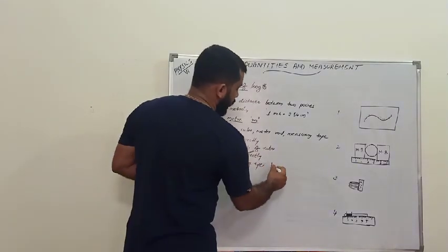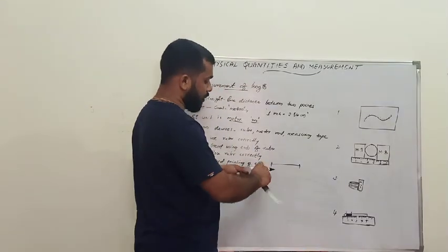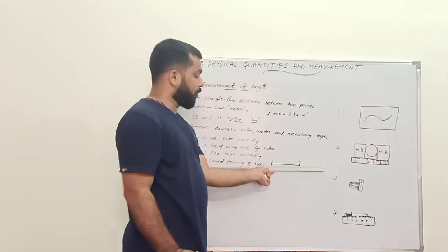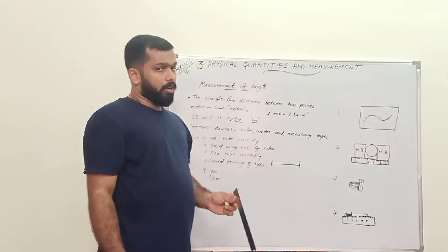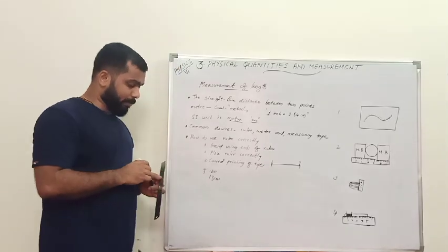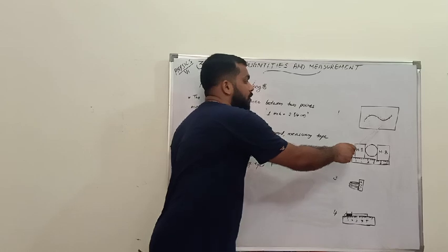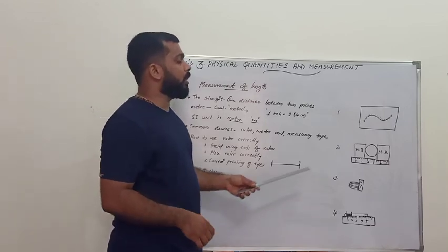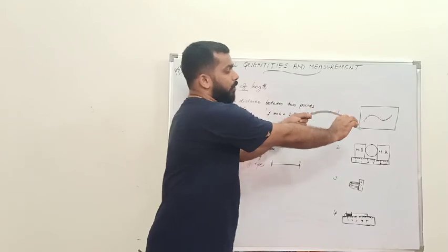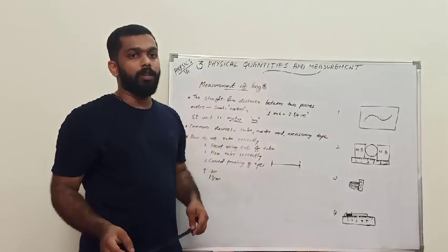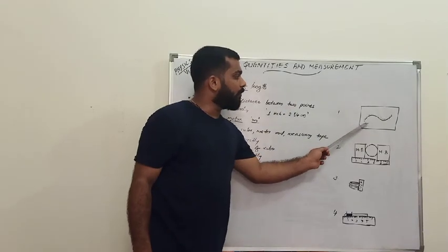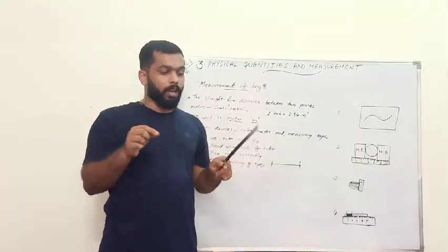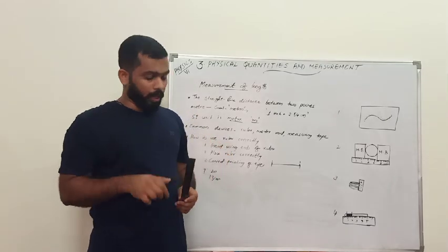For direct measurement of length, keep the ruler from the initial point to the final point and take the reading. For indirect measurement, suppose you want to measure the length of a curved line using a ruler — you cannot measure it directly. So take a thread, lay it along the curved line from one point to the other, then straighten the thread and measure it with the ruler. That gives you the length of the curved line.